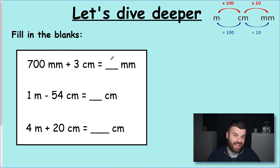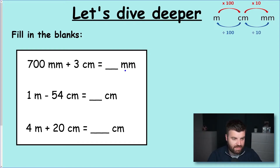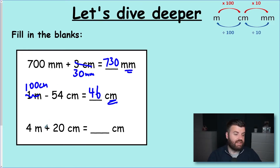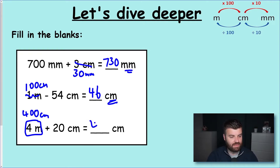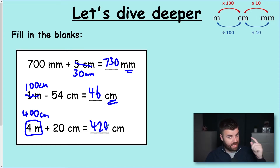Here are three in a row to try. The answer to the first is in millimeters: convert 3 centimeters to 30 millimeters (multiply by 10), so 700 plus 30 is 730 millimeters. Next: one meter take away 54 centimeters — keep it in centimeters, so one meter is 100 centimeters; 100 minus 54 is 46 centimeters. Finally: four meters plus 20 centimeters — four meters is 400 centimeters, plus 20 is 420 centimeters. As you build up the ability to spot those patterns you'll get quicker and quicker with practice.